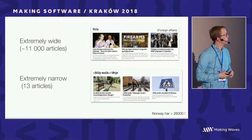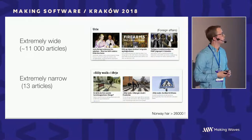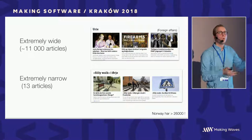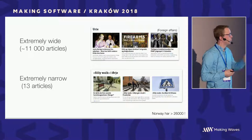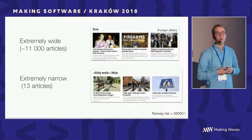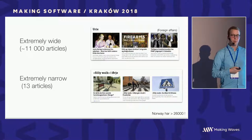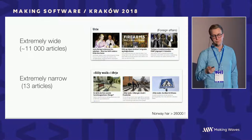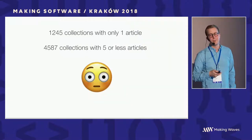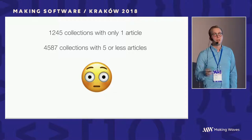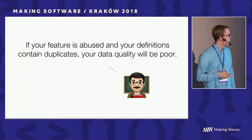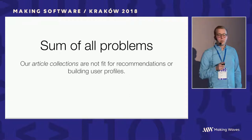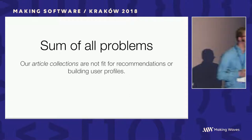The last problem is that our collections have different abstraction levels. The foreign affairs collection has over 11,000 articles because all articles about foreign affairs are put into it. But there are also some very small collections — 1,200 collections with only one article in them, and almost 5,000 collections with five or less. The sum of all these problems is that our article collections are not fit for recommendations or for building user profiles.